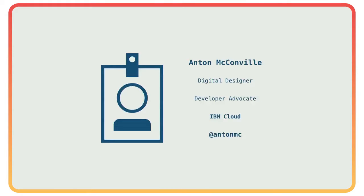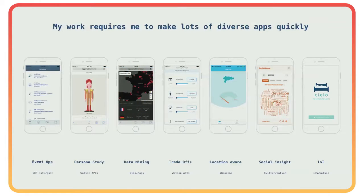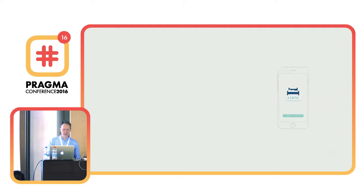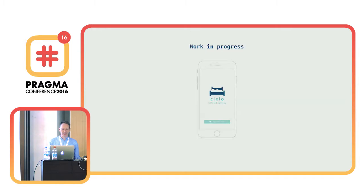I'm a developer advocate with IBM Cloud, but I have sort of an identity crisis because I'm also a designer. What being a developer advocate means is that I build lots of apps really quickly. Some of them are iOS apps, some of them are web apps. I build them as examples to share with our clients, to build with the developer community to find things out. And today I'm going to talk about one of them. It's a work in progress, and it's a hotel app.